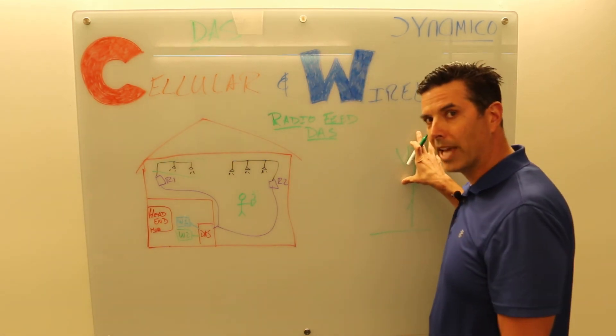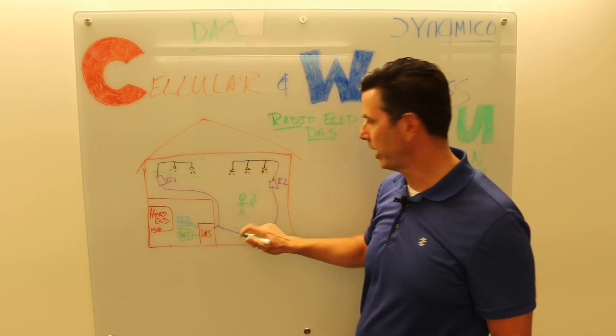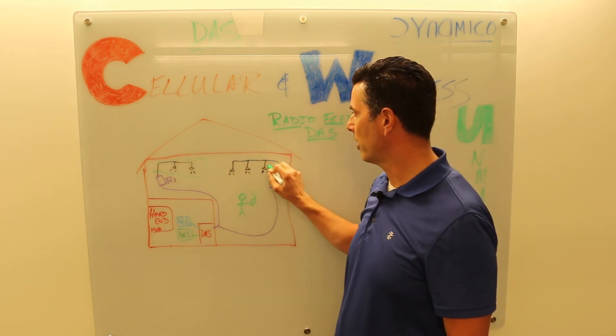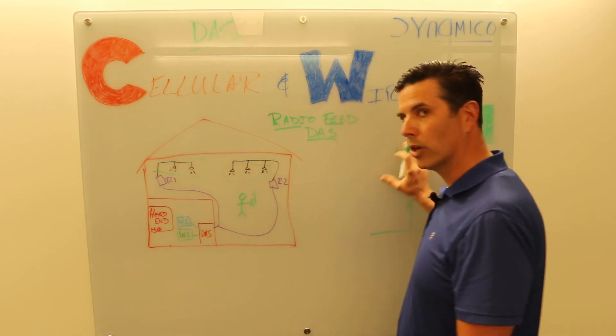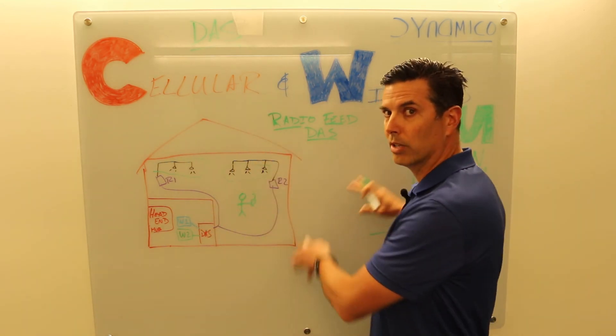They might see the signal from the outdoor, but this system is designed to be so much stronger that the mobile prefers this signal over the outdoor macro signal. You design it so that it has dominance over the macro network.